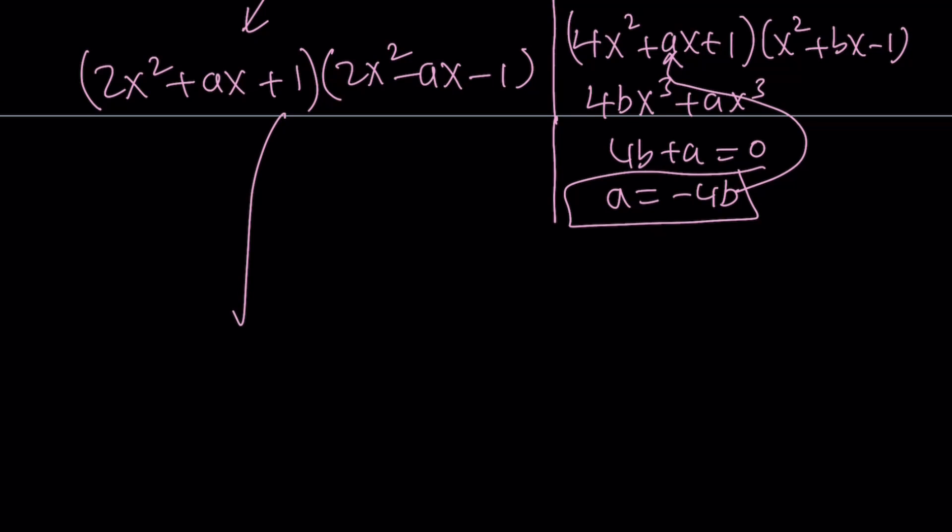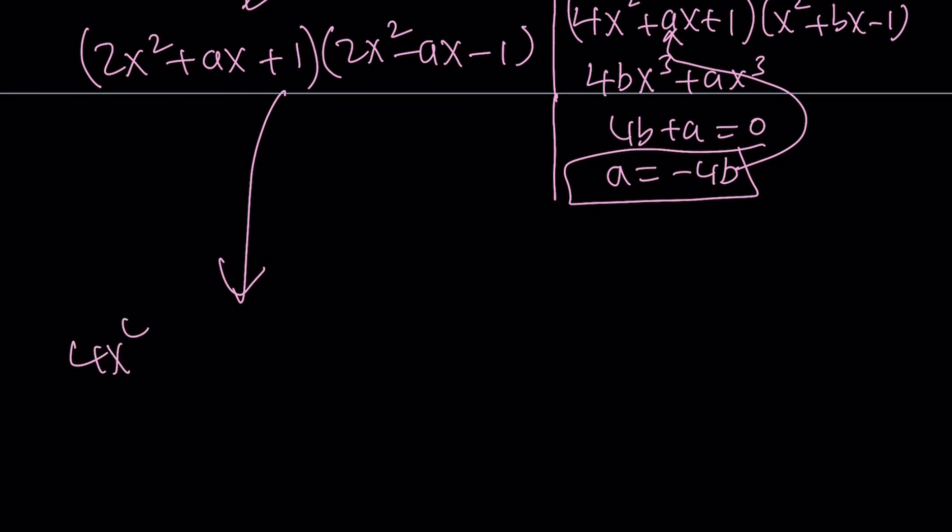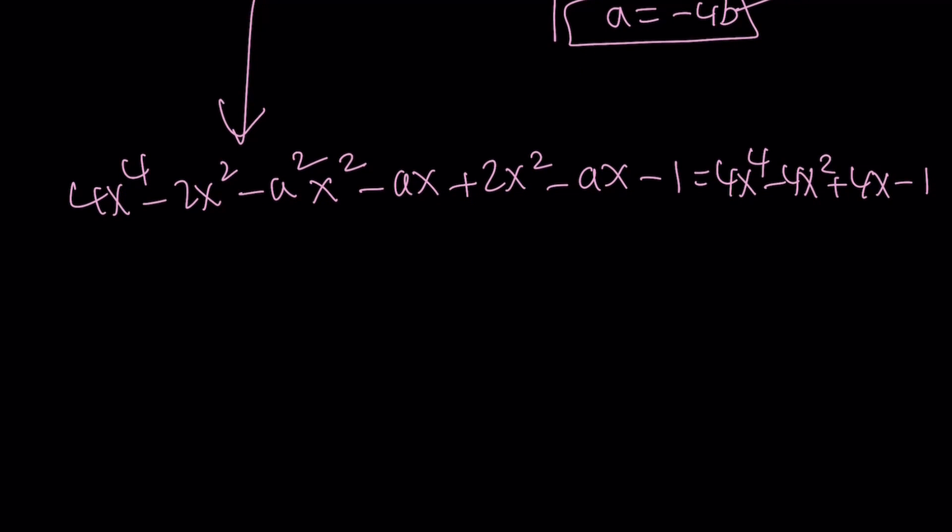This implies that when you distribute the whole thing, you're going to get 4x⁴. Obviously x³ is going to cancel out, so we don't have to worry about it. Minus 2x², and then distribute to get -a²x². I'm just skipping those terms. Minus ax, and then plus 2x² - ax - 1. And this is supposed to equal our quartic, which is 4x⁴ - 4x² + 4x - 1. Let's go ahead and arrange the terms on the left-hand side. Notice that 2x² cancels out, leaving us with 4x⁴ - a²x² - 2ax - 1, and that equals 4x⁴ - 4x² + 4x - 1.